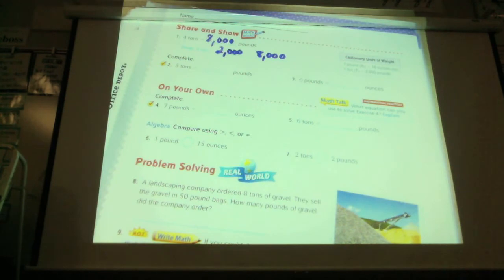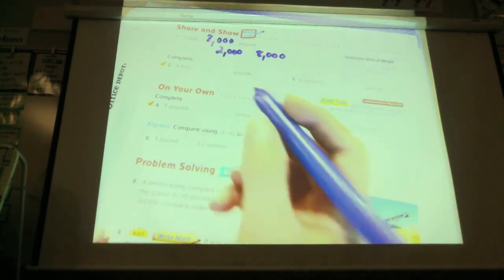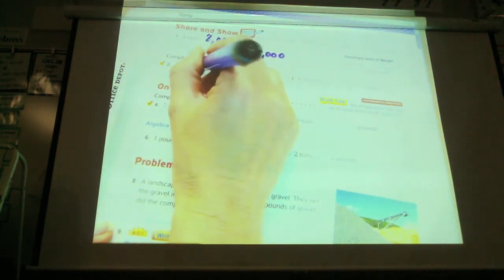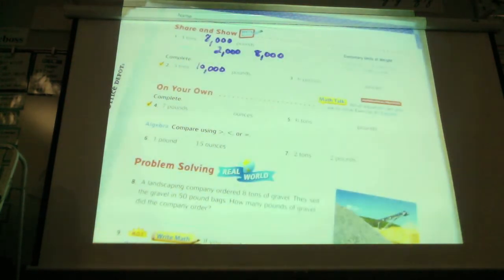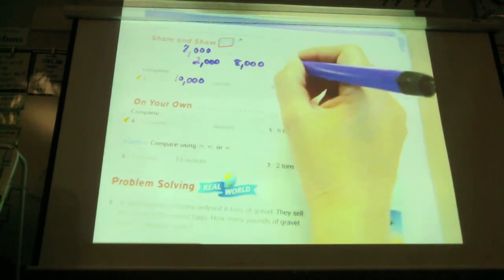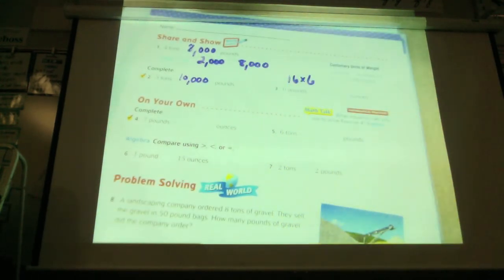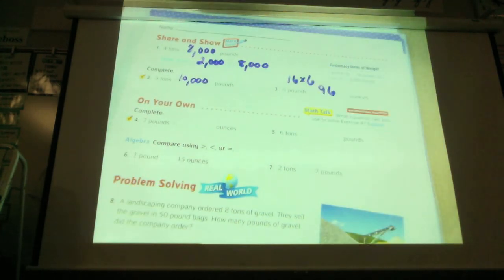5 tons equals how many pounds? Go ahead and do it on your own. What did you guys get for 5 tons equals how many pounds? 10,000. Nice. So the next one is, go ahead and figure out how many ounces are in 6 pounds. Why don't you tell me, what did you get? 16 times 6. So this is how you got it? 16 times 6. And what did you get when you did 16 times 6? 96 ounces. So 96 ounces is right.